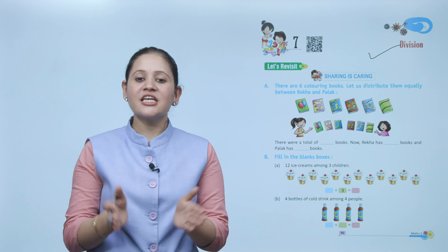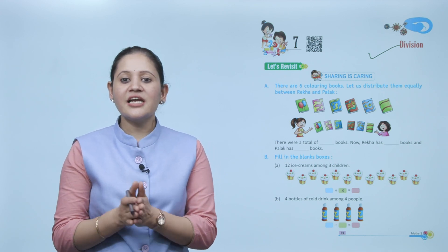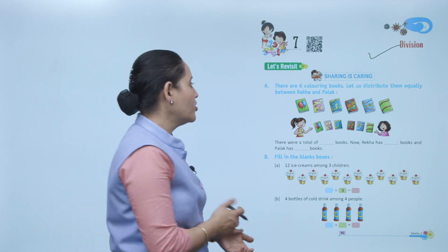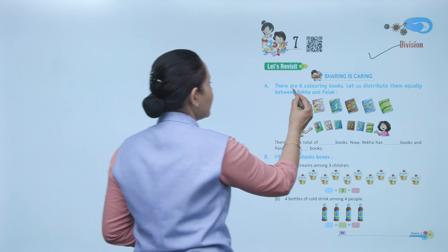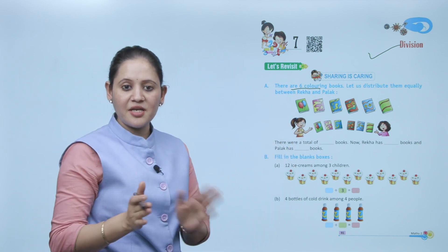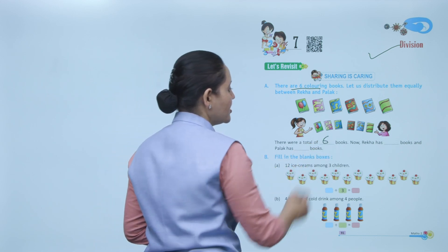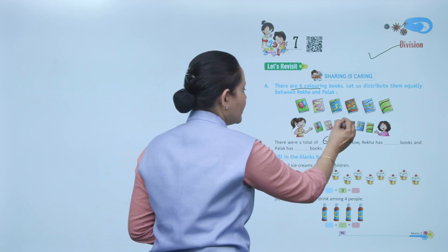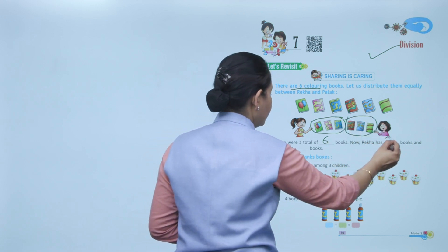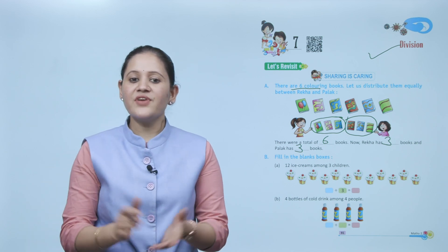Let's revisit sharing is caring. There are six coloring books. We have to distribute them equally between Rekha and Palak. Total six coloring books, so three each — Rekha has three books and Palak has three books.